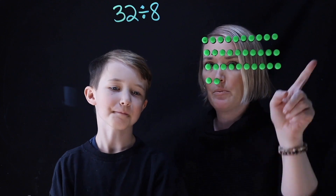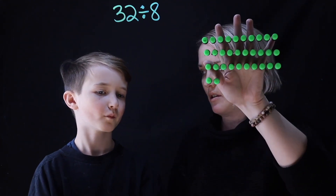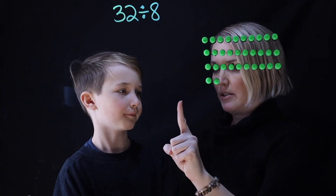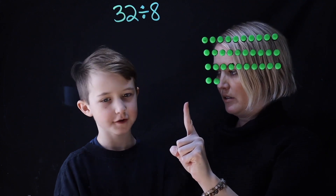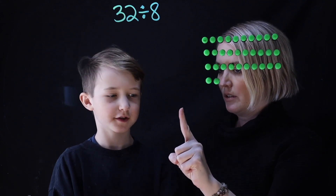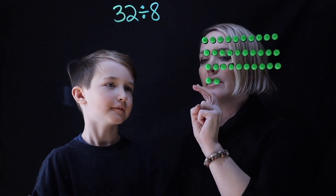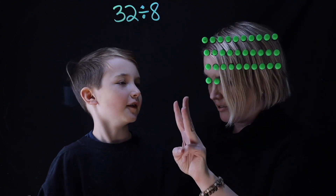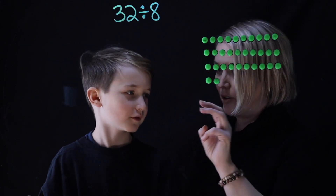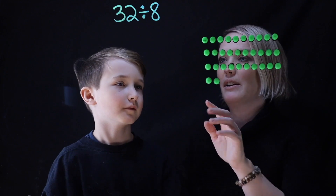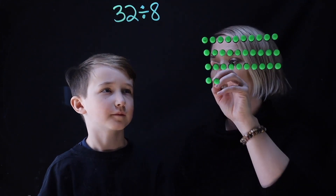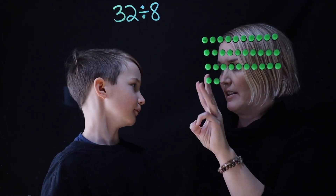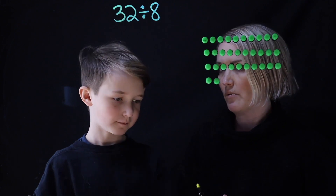So let's do it really fast, and then we'll show them what it looks like on these dots. So 32 divided by 2 would be 16. And then divided by 2 would be 8. And then divided by 2 would be 4. So basically you split 32 into 8 equal groups by dividing by 2 three times.